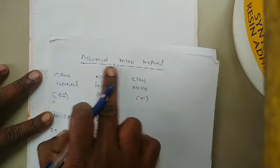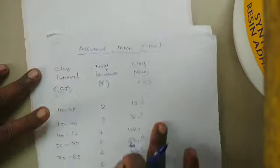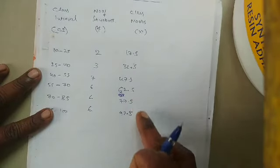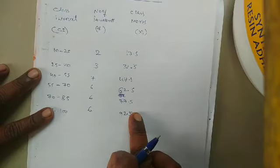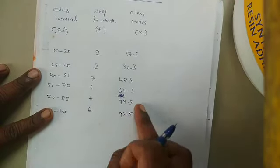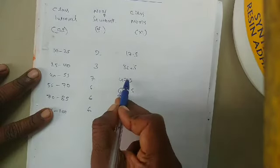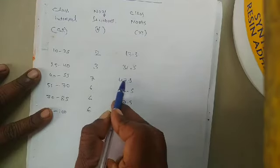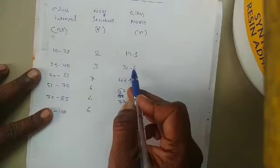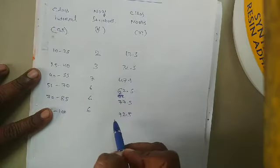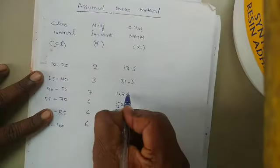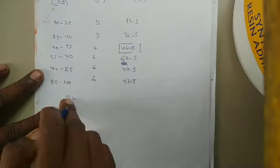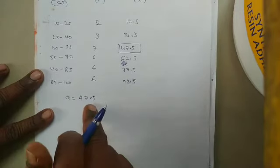As the name indicates, in the assumed mean method you can assume one value. We have 6 class mark values. I will assume the middle value: A = 47.5. This assumed value is called 'a'.